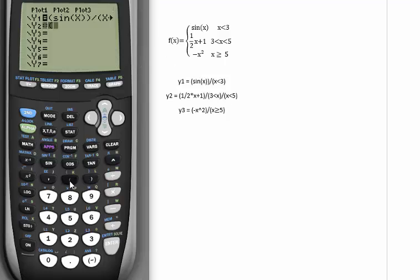And then my next piece: parentheses, one-half, go ahead and do a times symbol, times x plus 1, group that up, divided by—again I have to split the conditions here. So we have 3, second, math, less than is number 5, 3 is less than x, divided by parentheses, x less than 5.